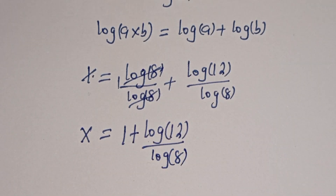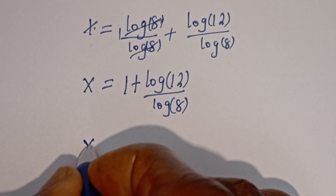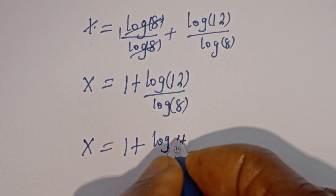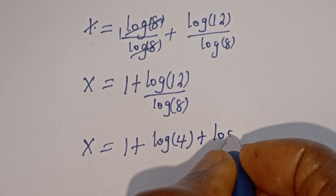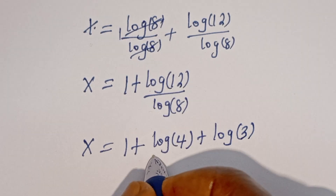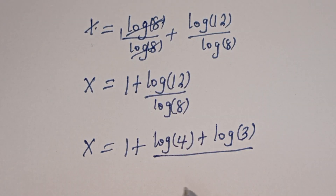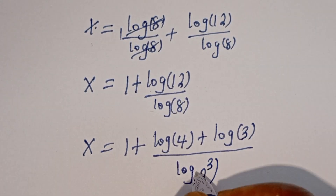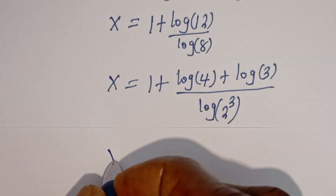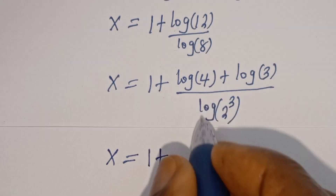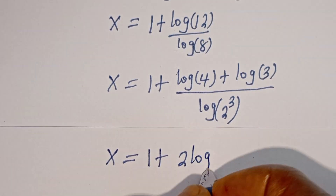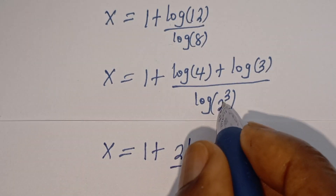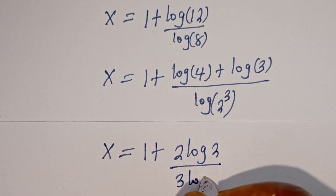Now we can express this further. s is equal to 1 plus log 12, which can be written as log 4 plus log 3, divided by log h, which can be written as log 2 to the power of 3. From here, log 4 can be written as log 2 squared, and this divided by log 2 to the power of 3 can be written as log 3 log 2.